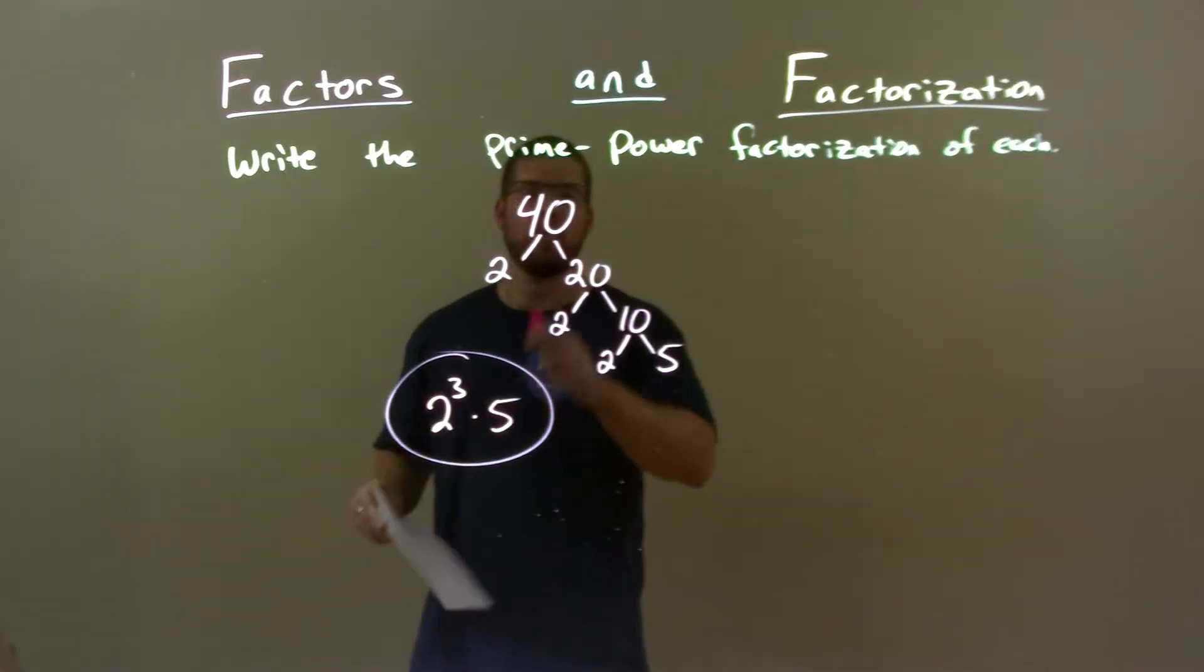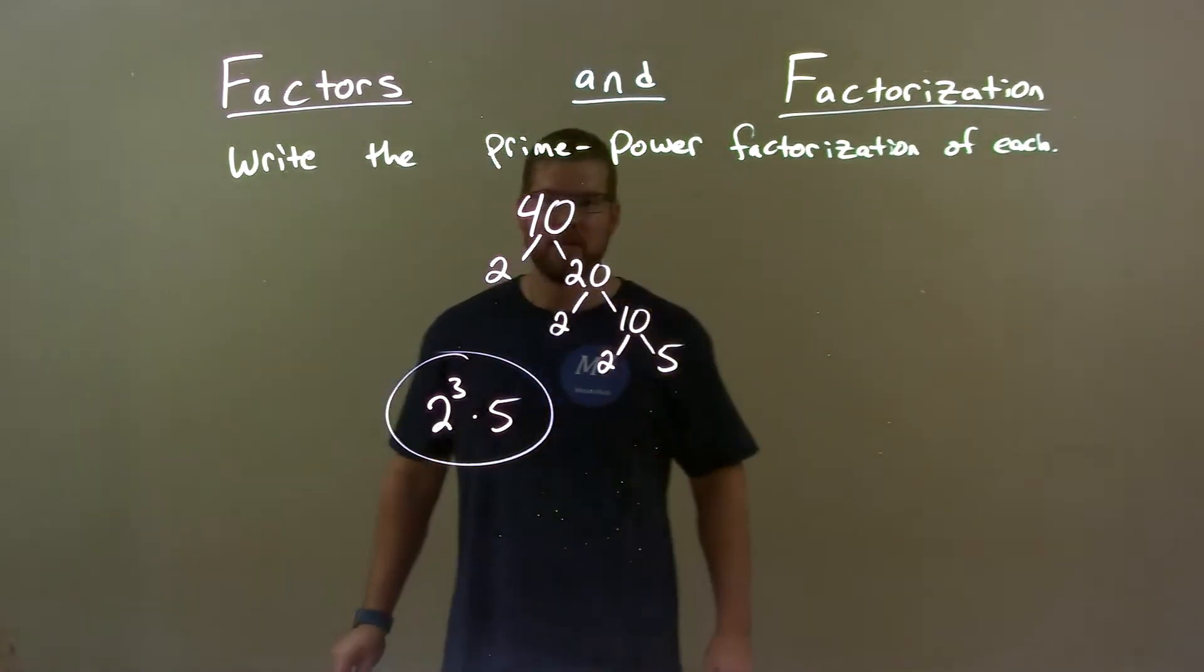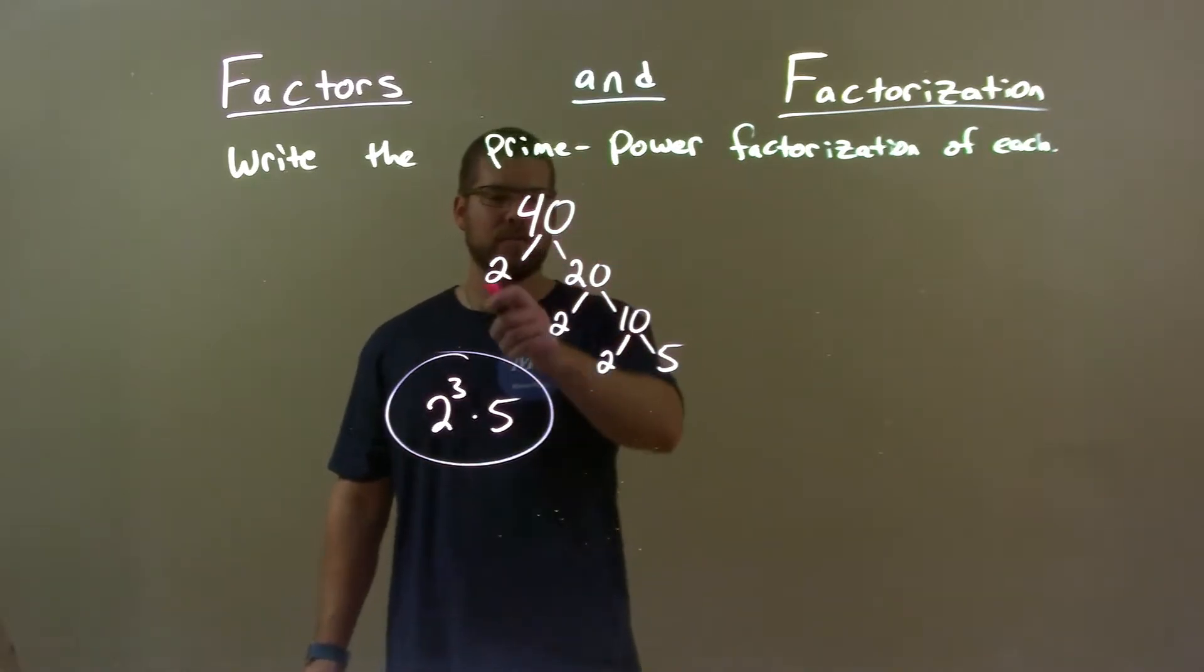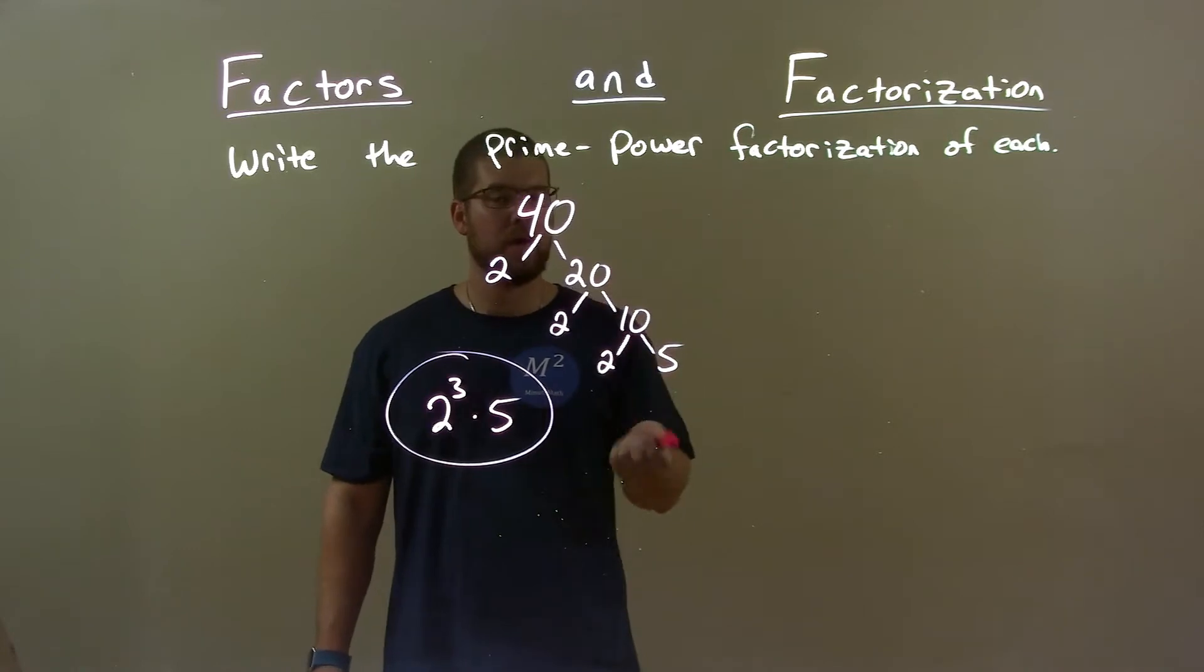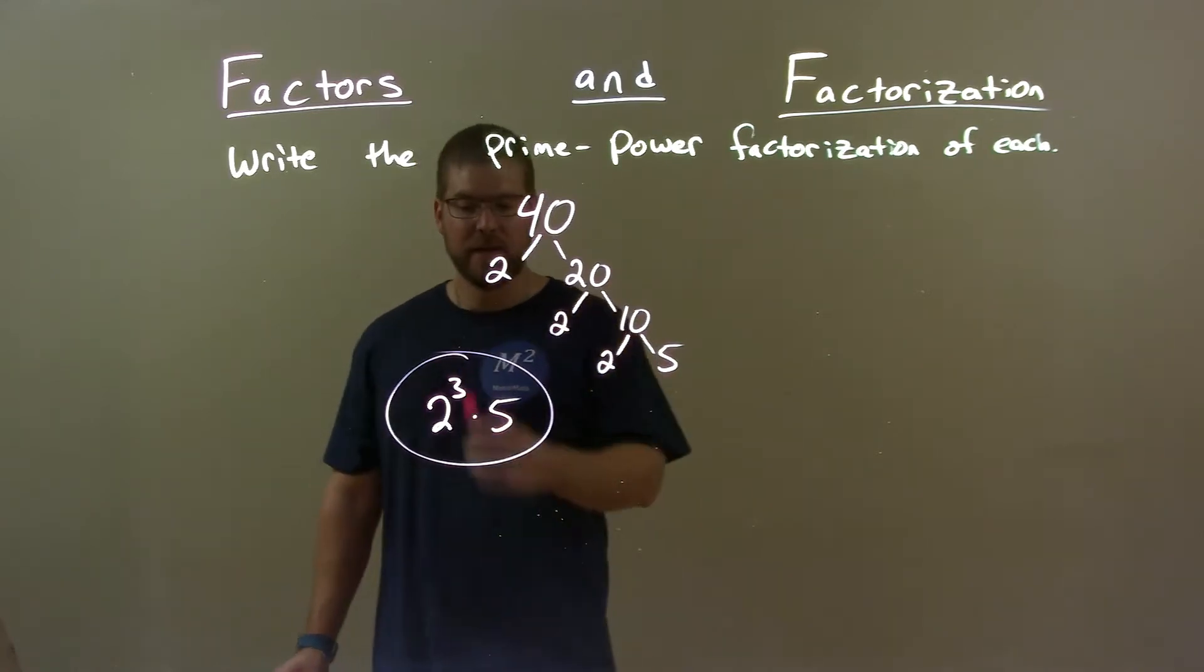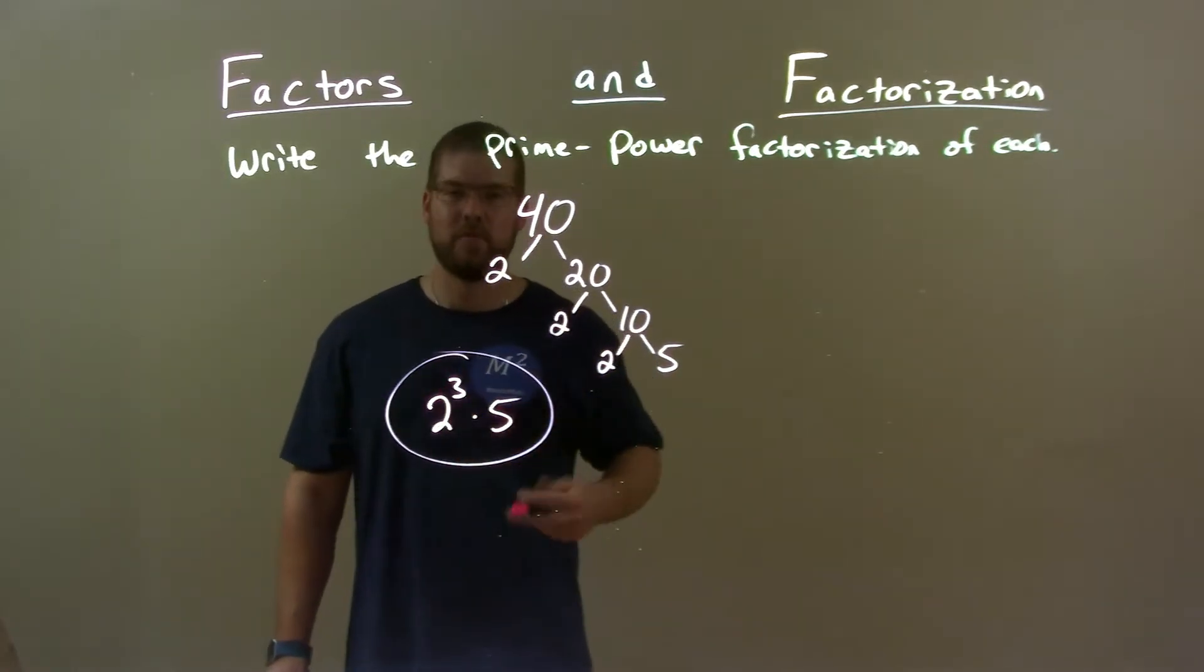Quick recap, we're given 40, and we can write the prime power factorization of it. Well, prime factorization gave us 2, 2, 2, and 5. We know 2 times 2 times 2 is 2 to the third power. So again, final answer, 2 to the third times 5.